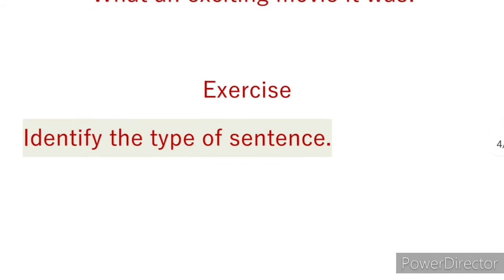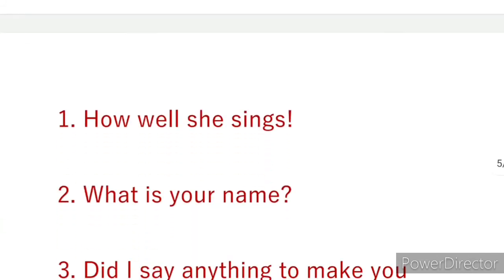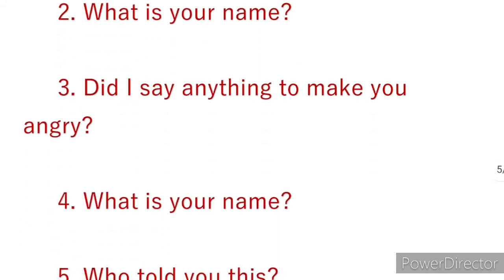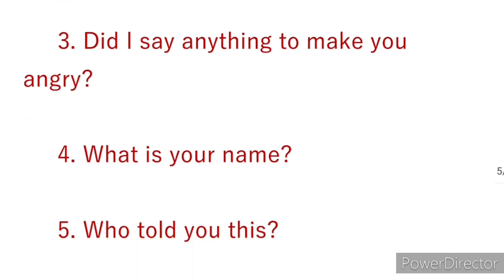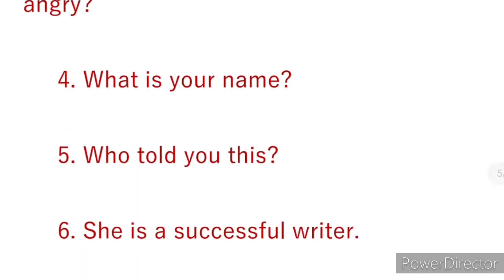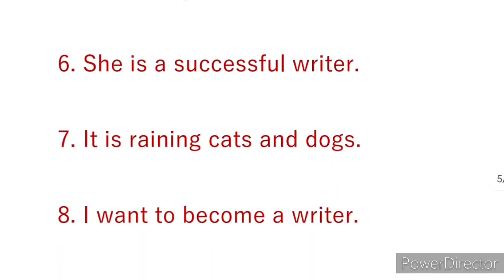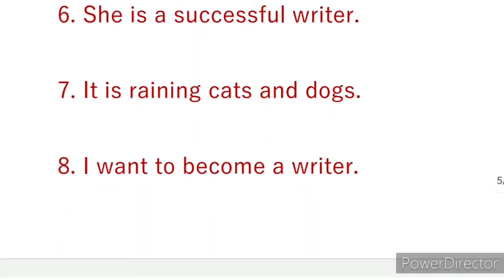Now let us do some exercises to identify the types of sentences. 'How well she sings' — exclamatory. 'What is your name?' — interrogative. 'Did I say anything to make you angry?' — interrogative. 'What is your name?' — interrogative. 'Who told you this?' — interrogative.